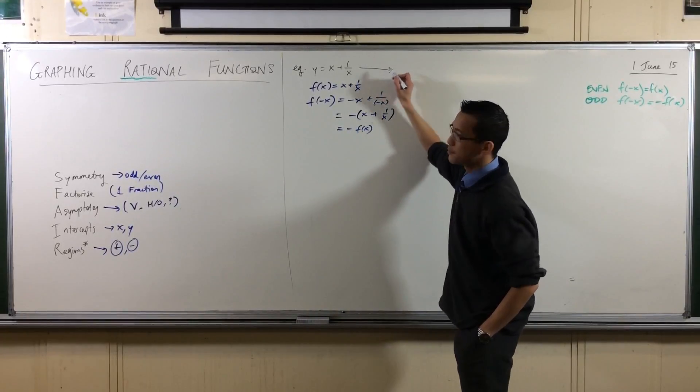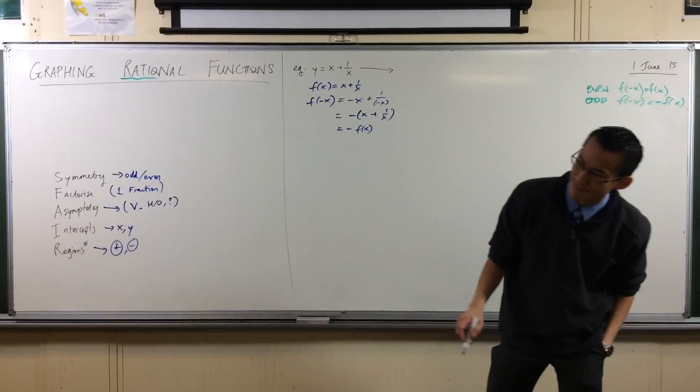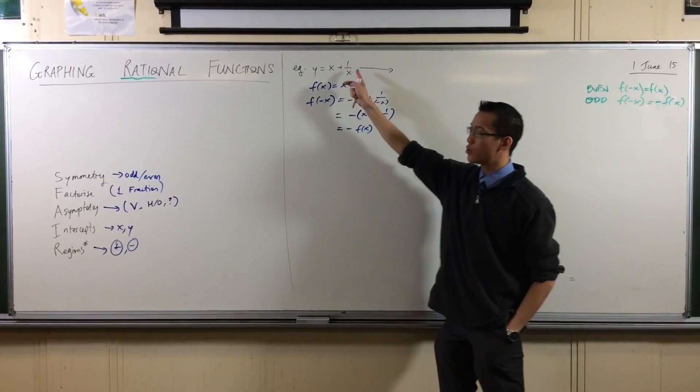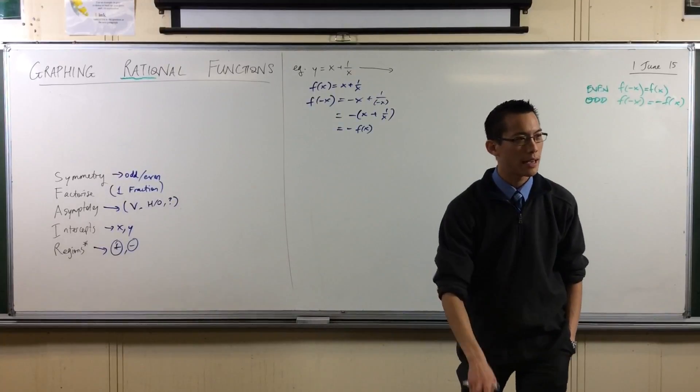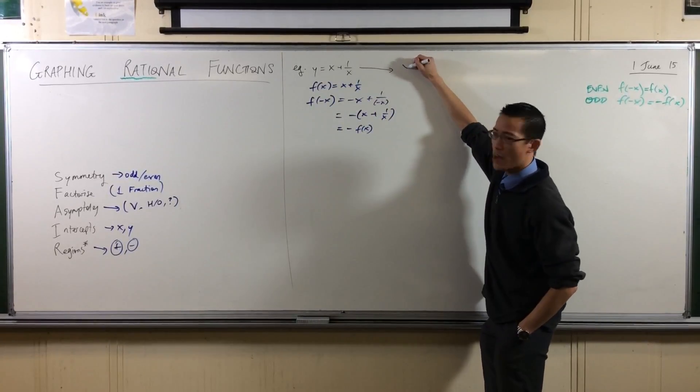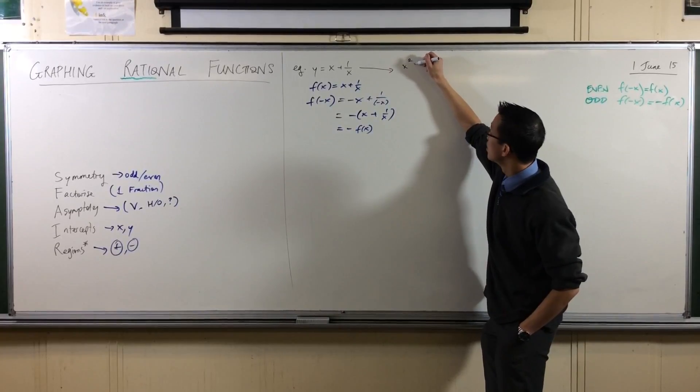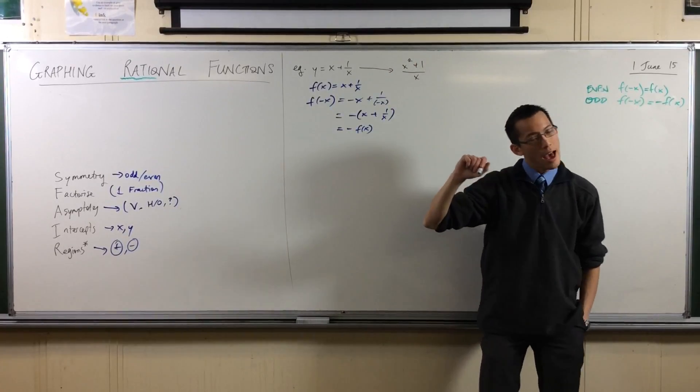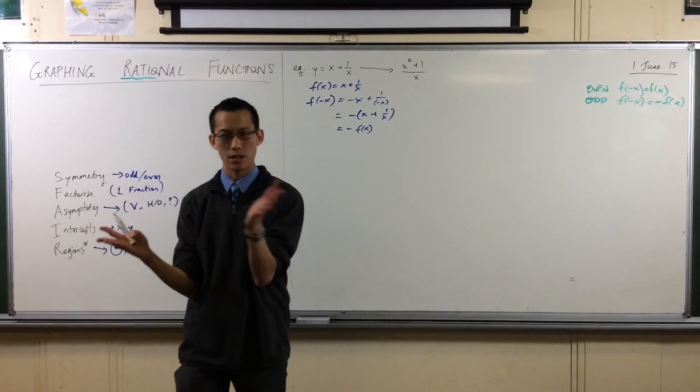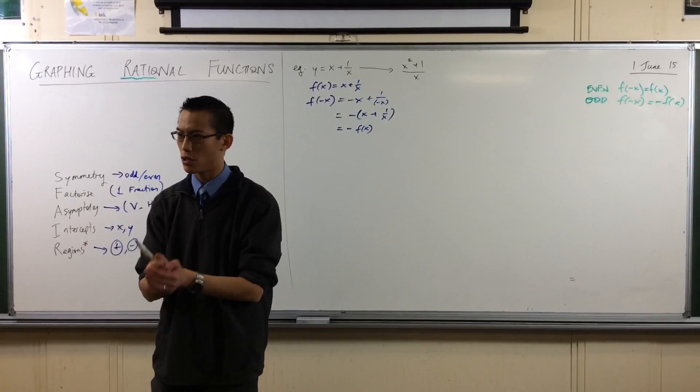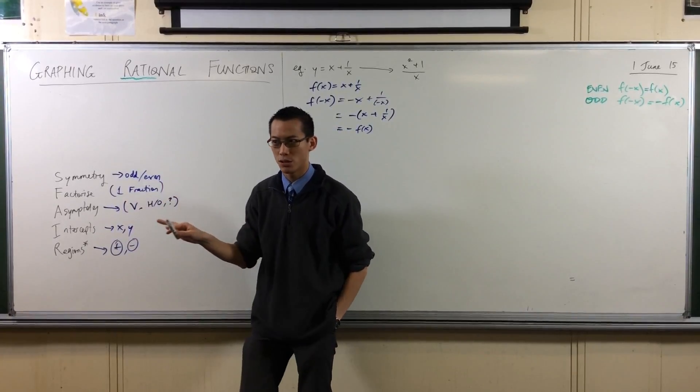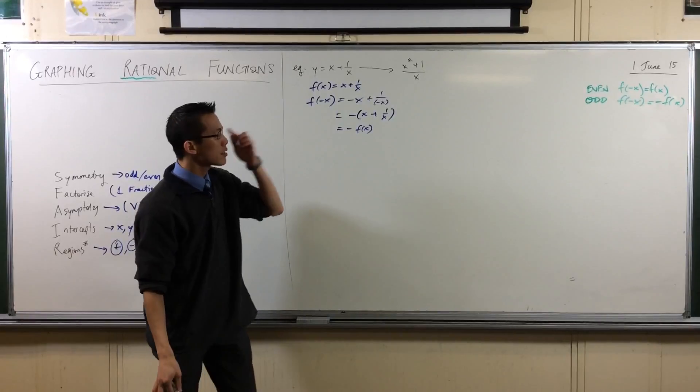Another way that you could see it is this idea of putting things in one fraction is very important and helpful. If I were to combine these two components into one fraction, what would I get on the numerator? I'd have X squared plus 1 on X. When you're looking for odd or even symmetry, you need to pay close attention to the powers and where you get odd or even powers.